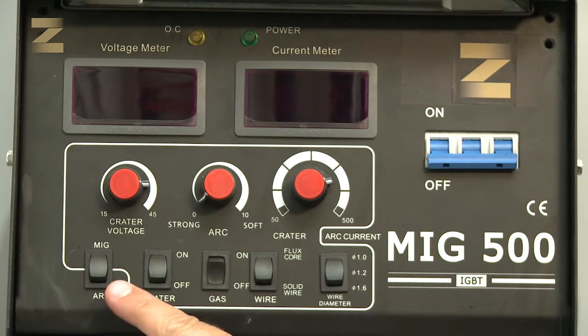MIG MMA switch: MIG for CO2 wire welding, MMA for electrode welding.